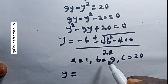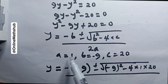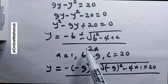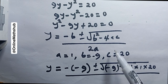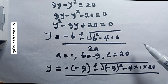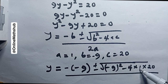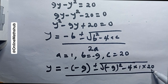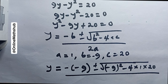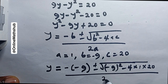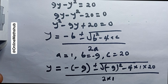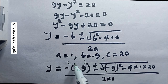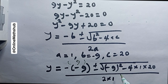Replacing the values: b is minus 9, so negative b becomes positive 9. Substituting into the formula gives 9 plus or minus the square root of (negative 9) squared minus 4 times 1 times 20, all divided by 2 times 1, which is just 2.